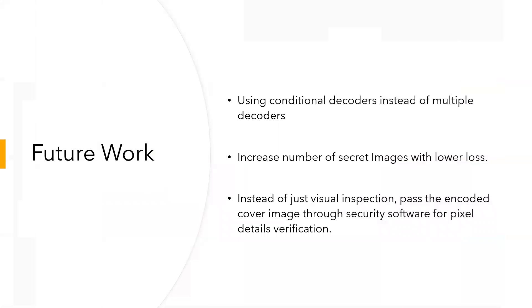Coming to the future work, we can also use conditional decoders instead of multiple decoders. We plan to increase the number of secret images that we can hide in the container image, keeping the loss as low as possible. Here we have used visual inspection as a primary metric, but we aim to make our model more robust so that even security software would not be able to detect it.